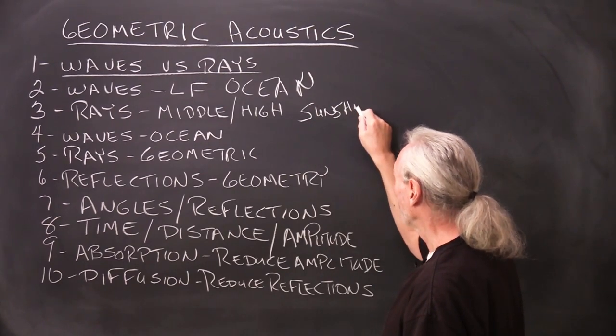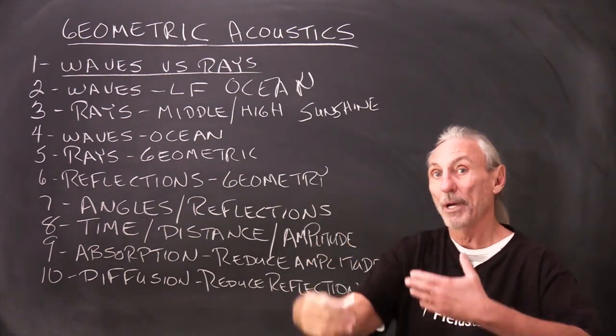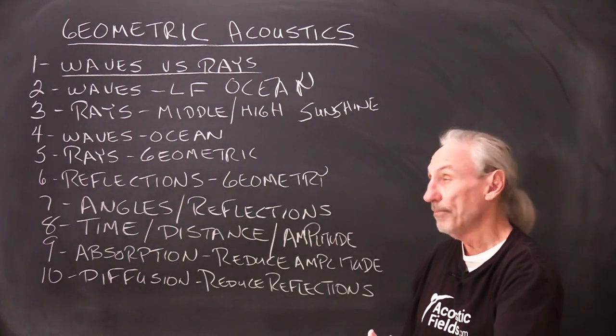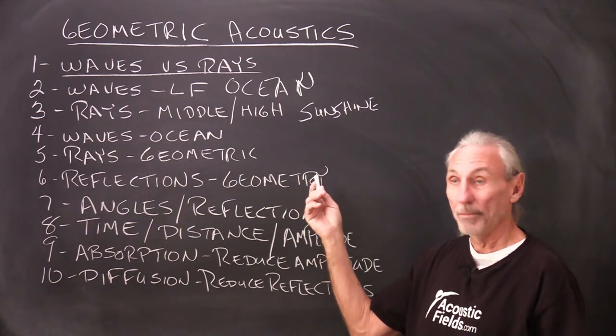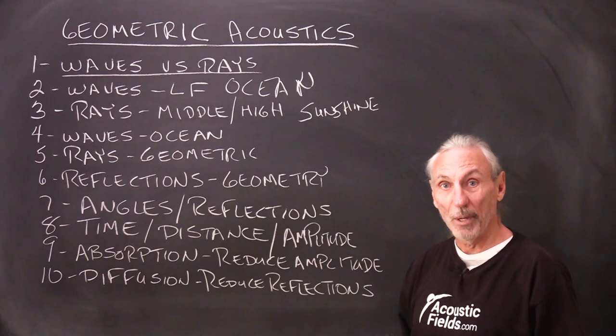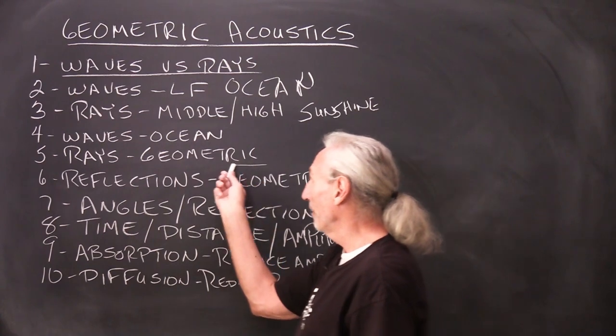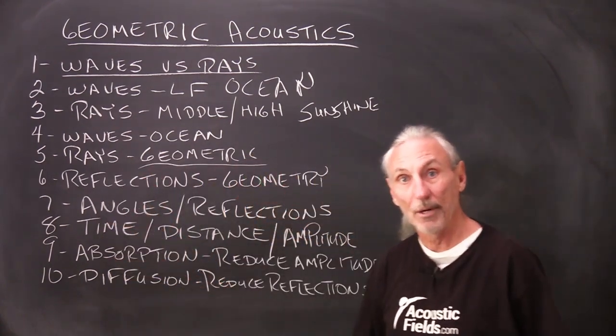Now what's the difference between the two? Well ocean, big pressure waves that oscillate throughout our room, hopefully not in your room. Sunshine is a straight line situation. So when we get straight lines all the time versus waves, then we have what's called geometry going on.